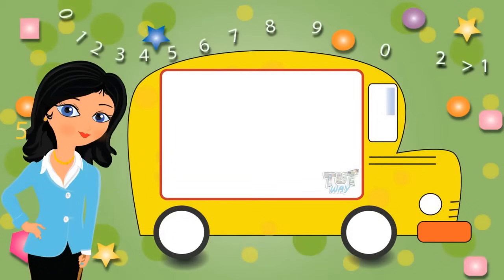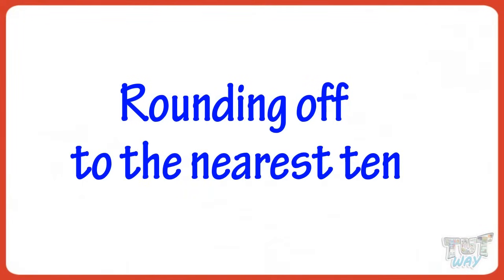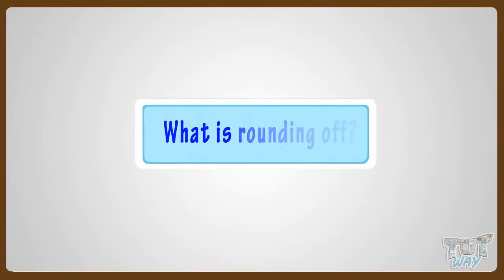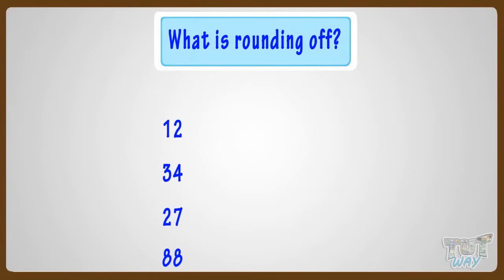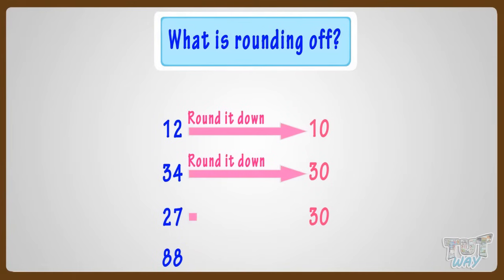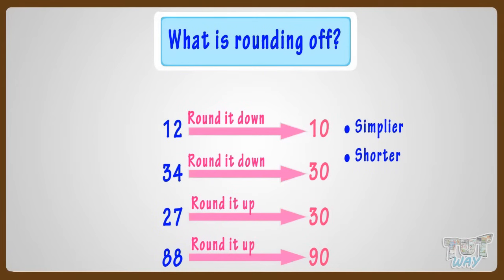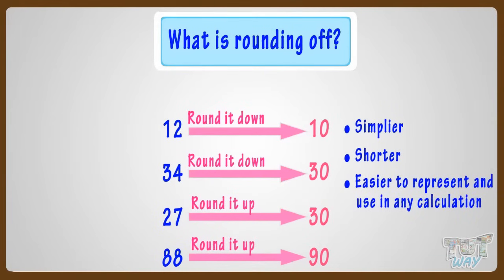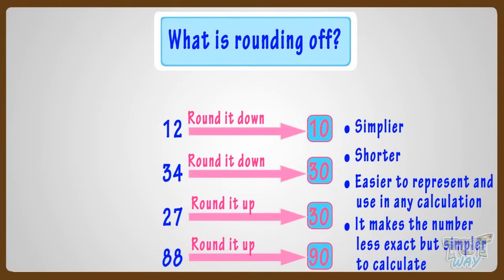Hi kids, today we will be learning rounding off numbers. First of all, what is rounding off? Rounding is to replace the number with another one that has a value approximately equal to our original number, but is simpler, shorter, and easier to represent and use in any calculation. It makes the number less exact but simpler to calculate.